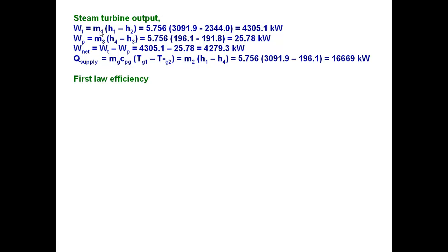WT means steam turbine output that is M1 into H1 minus H2 that is equal to 4.3 megawatts. The pump input is 25 kilowatts, the net is WT minus WP that is around 4.279 megawatts.